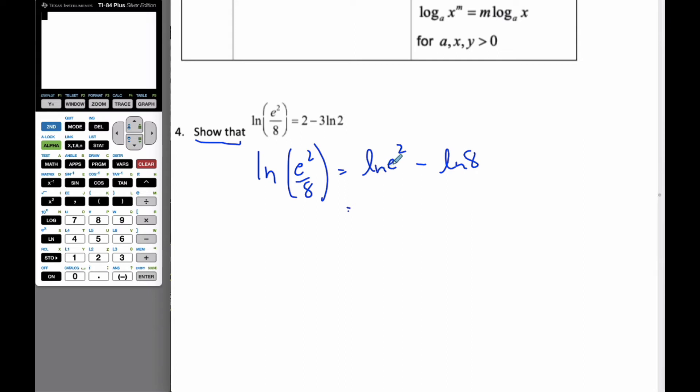I know that the natural logarithm and e are inverses of each other, so they cancel each other out. And so that just becomes 2 minus ln 8. This is my target. I somehow have to relate the 3 and the 2.